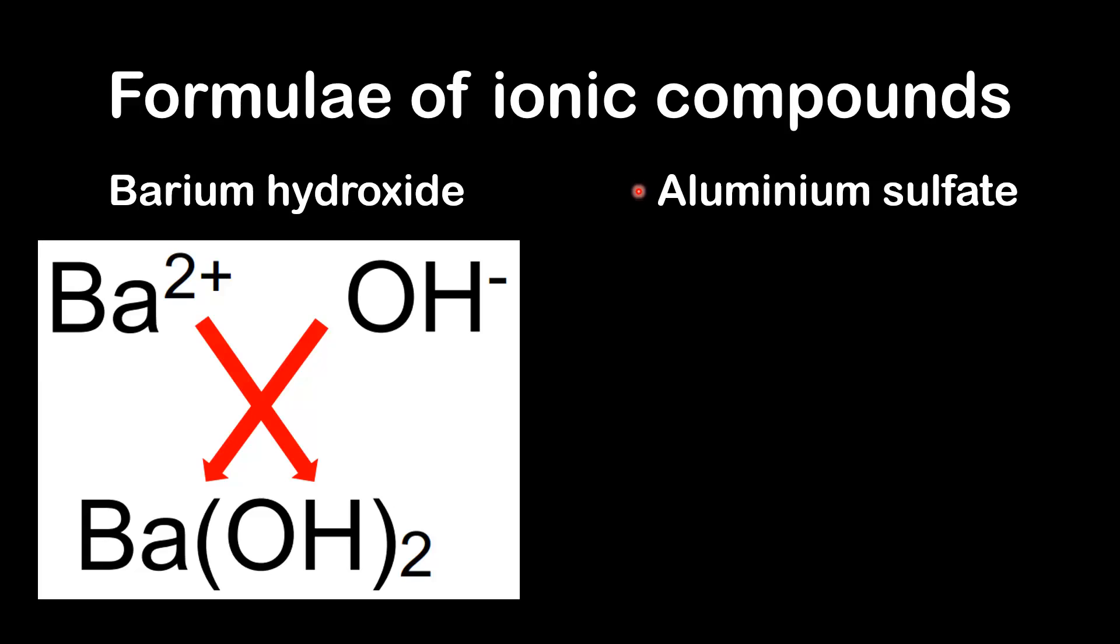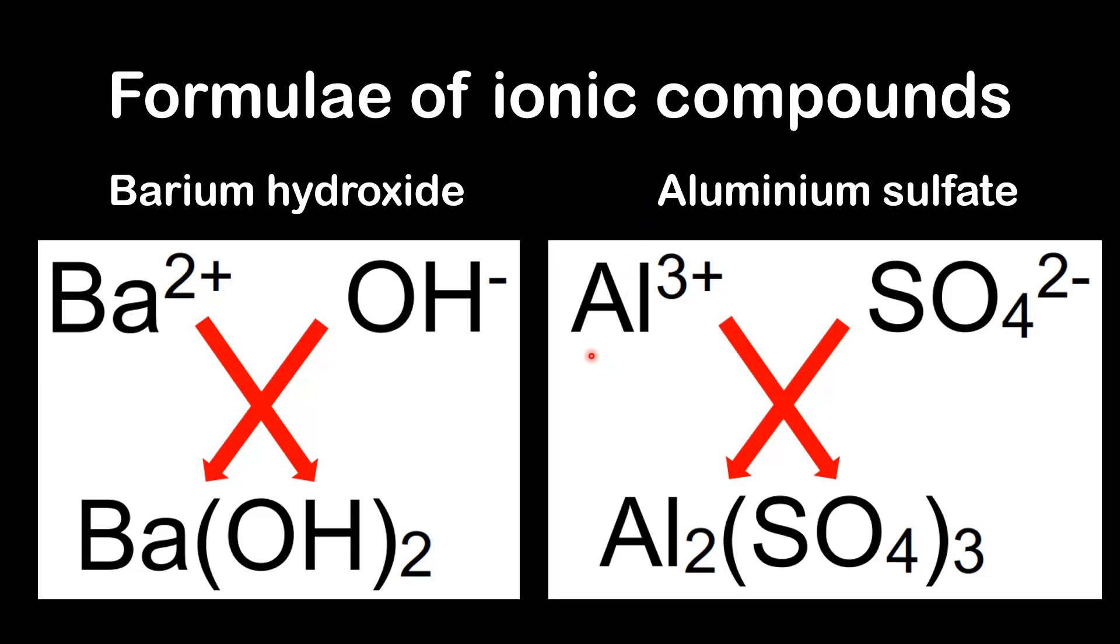Our last example is aluminium sulphate. The aluminium ion is Al3+. The sulphate ion is SO4 2-. So we use the crossover technique. The 2 goes down to the bottom here and the 3 goes down to the bottom here. Once again we have to use brackets to separate this 4 and this 3. So the formula for aluminium sulphate is Al2(SO4)3.